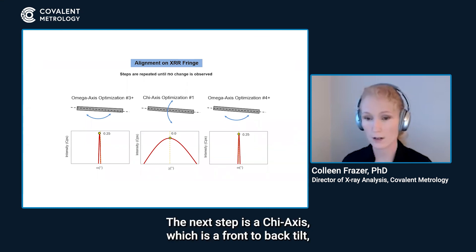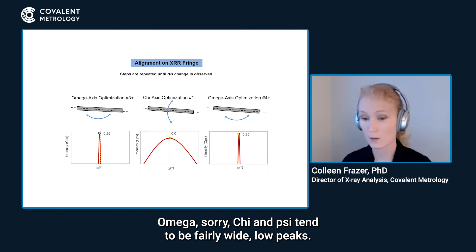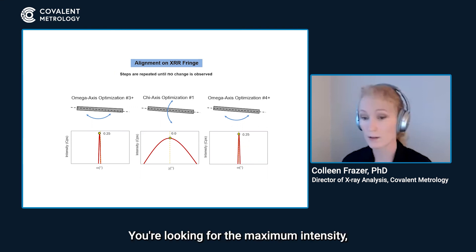The next step is a chi axis which is a front to back tilt if omega is side to side. Chi scans tend to be fairly wide low peaks. You're looking for the maximum intensity and setting that to zero and then repeating the omega axis again. Again, three omega two chi optimization, something like that is a common number to reach a convergence of angles so there's no change.